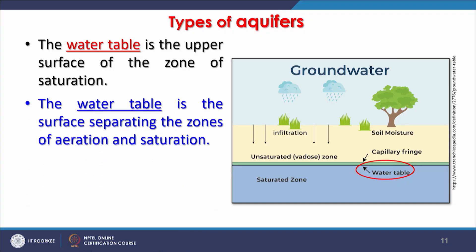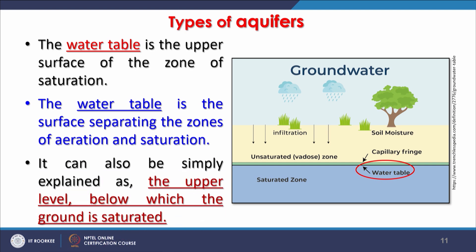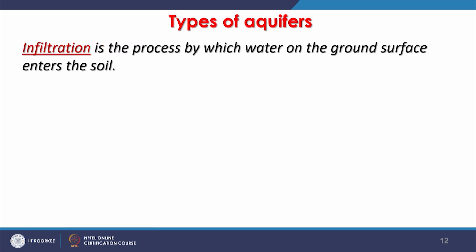The water table is the upper surface of the zone of saturation — the surface separating the zones of aeration and saturation. It can simply be explained as the upper level below which the ground is saturated. These terms will be used throughout this course.